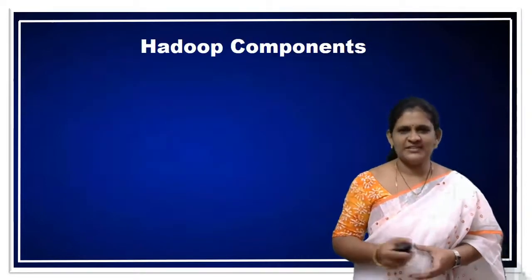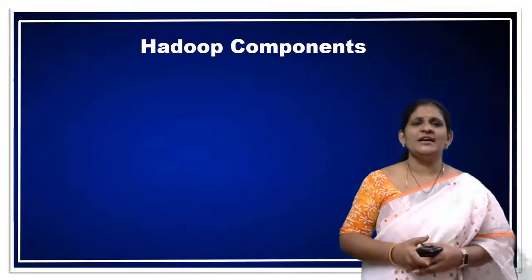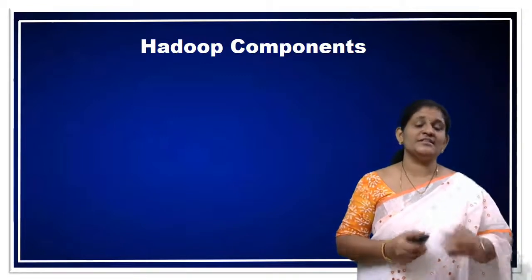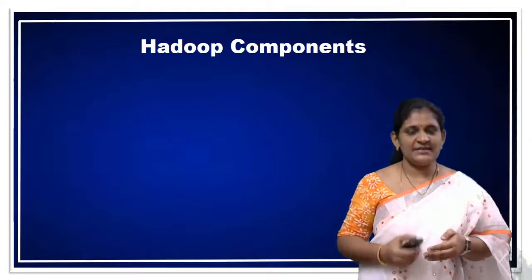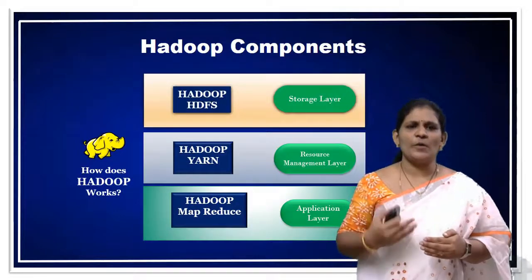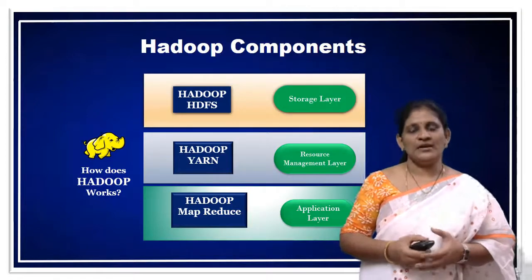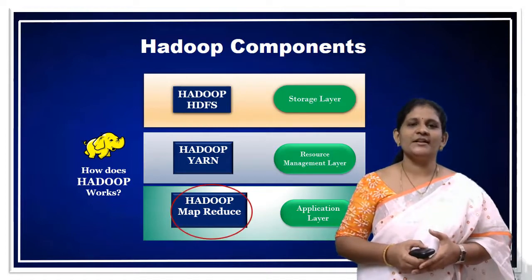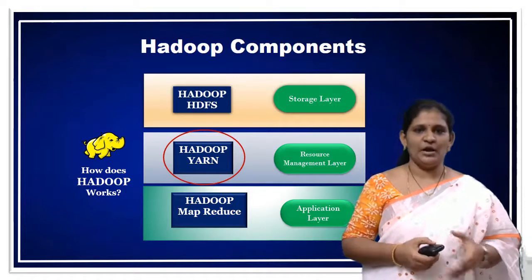Hadoop components. From the last session onwards, we have been discussing what is Hadoop. Hadoop is a framework which is used to store and process large amounts of data using HDFS and MapReduce programming model. The different components of Hadoop are: one is HDFS, another one is MapReduce, and the third one is YARN. These three are the major components of Hadoop.